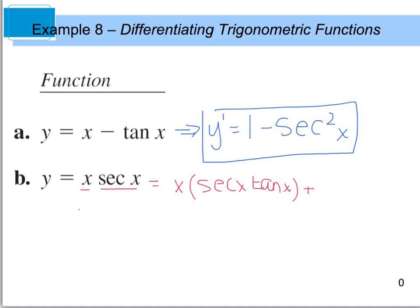Then I'm going to add that to the second, which is secant x, times the derivative of the first, or 1. And what I get from that is x secant x tan x plus secant x.